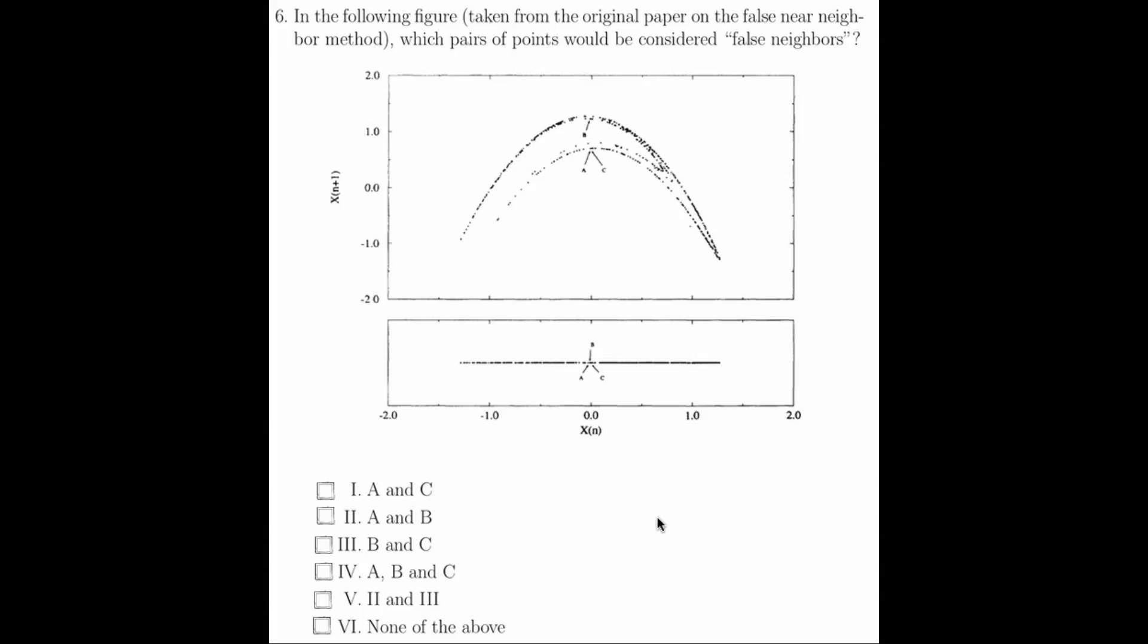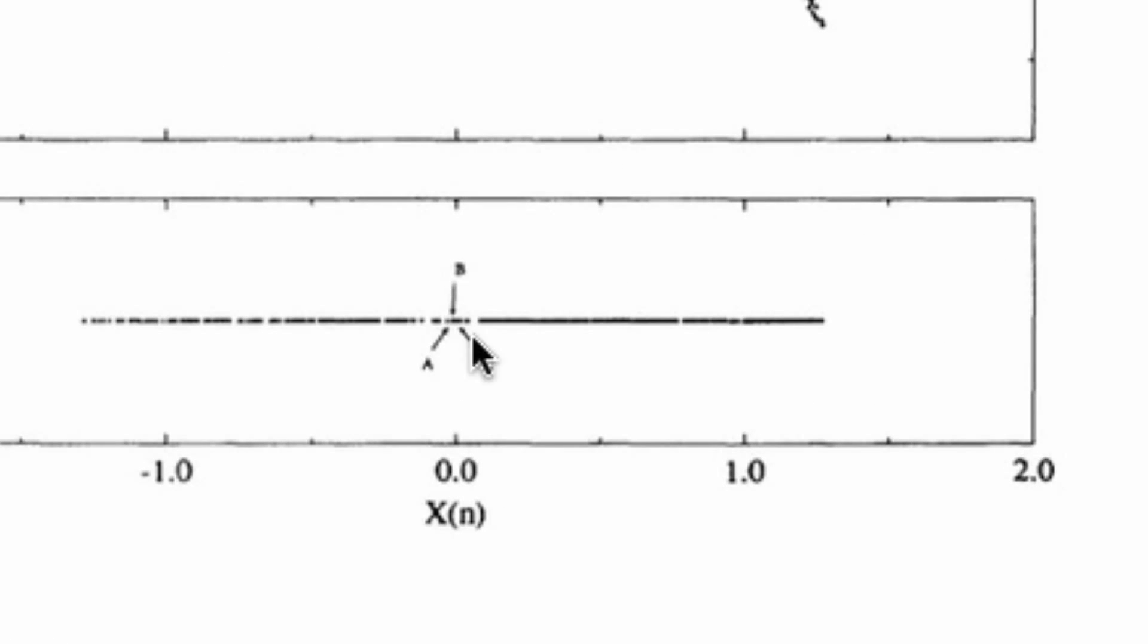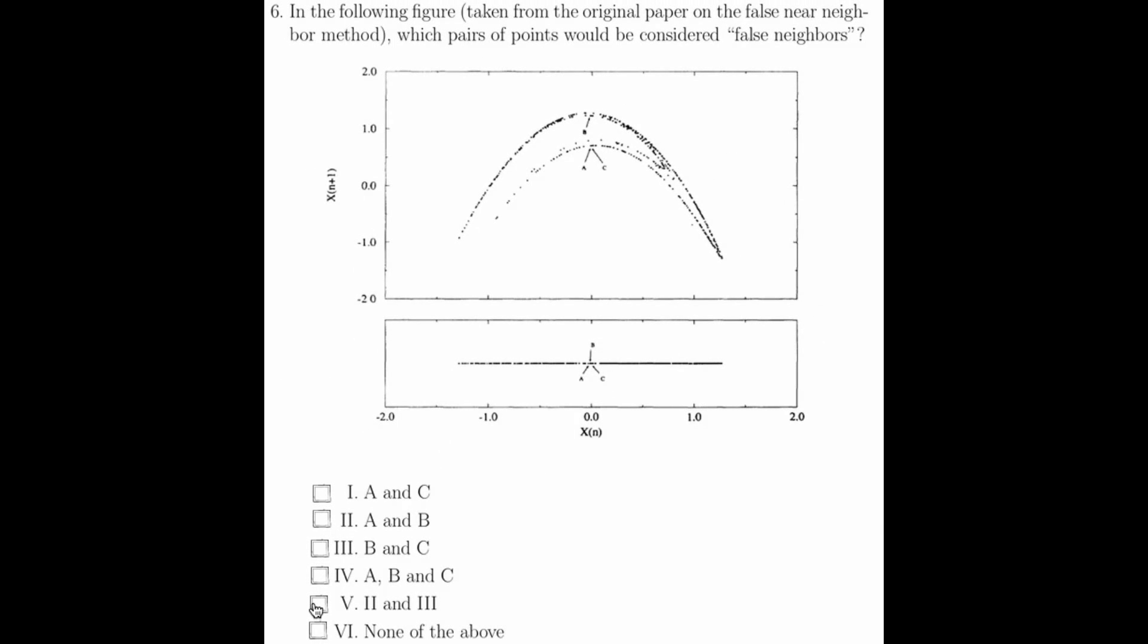Question 6 asks which of the following points A, B, and C are false neighbors. As you can see, in dimension 1, A, B, and C are all neighbors. However when we embed it in two dimensions, A and C are still neighbors, so they are true neighbors, but now A and B and B and C are no longer neighbors, so these would be false neighbors. So this would be answer 5. Both A and B and B and C are false neighbors.